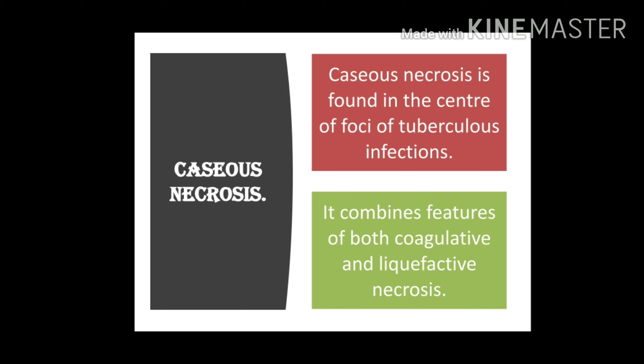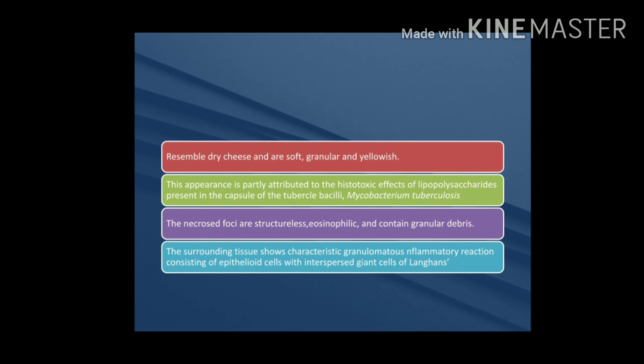The dead cell debris formed is called a poke-eye appearance, also referred to as the Langhans giant cell. The Langhans giant cell is a large dead-cell structure. From the external appearance, it looks like dry cheese — whitish in color, with a soft, granular, and cheesy consistency. This necrosis is structureless, eosinophilic, and contains granular debris surrounded by granulomatous inflammatory reaction with epithelioid cells and Langhans giant cells.